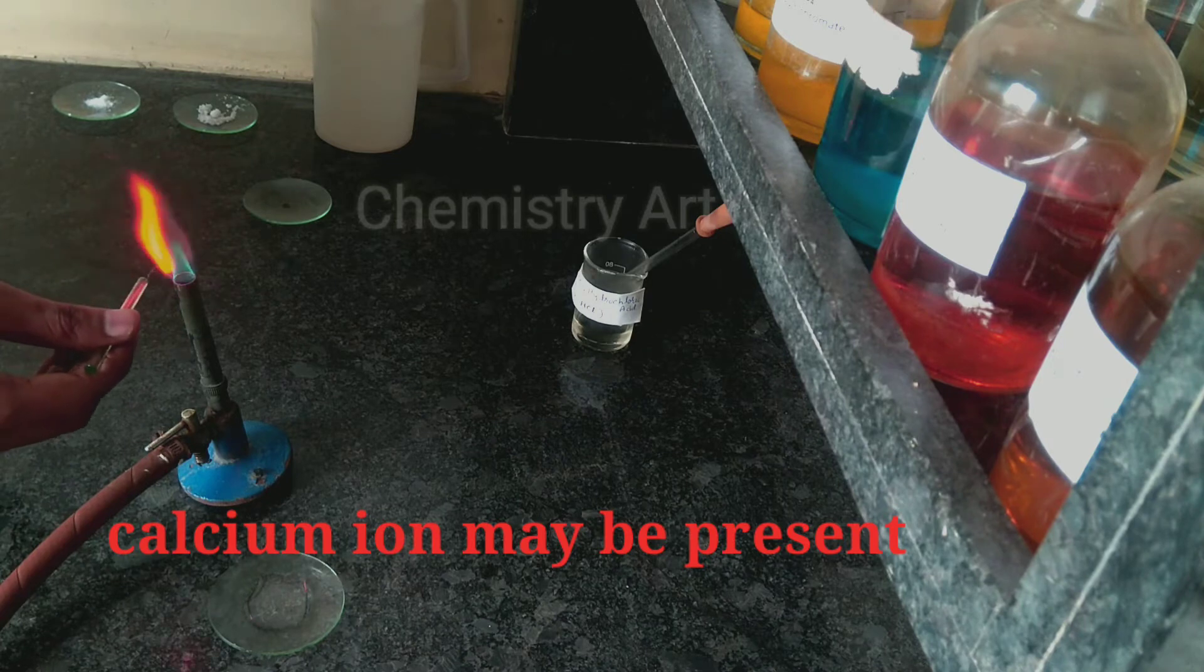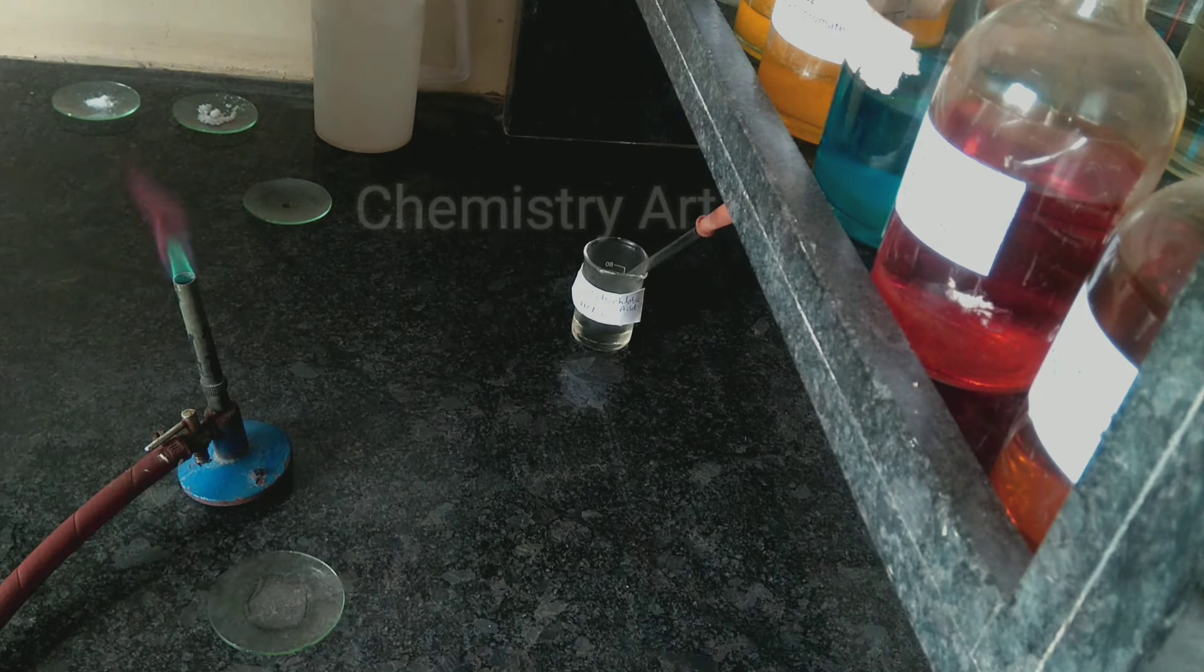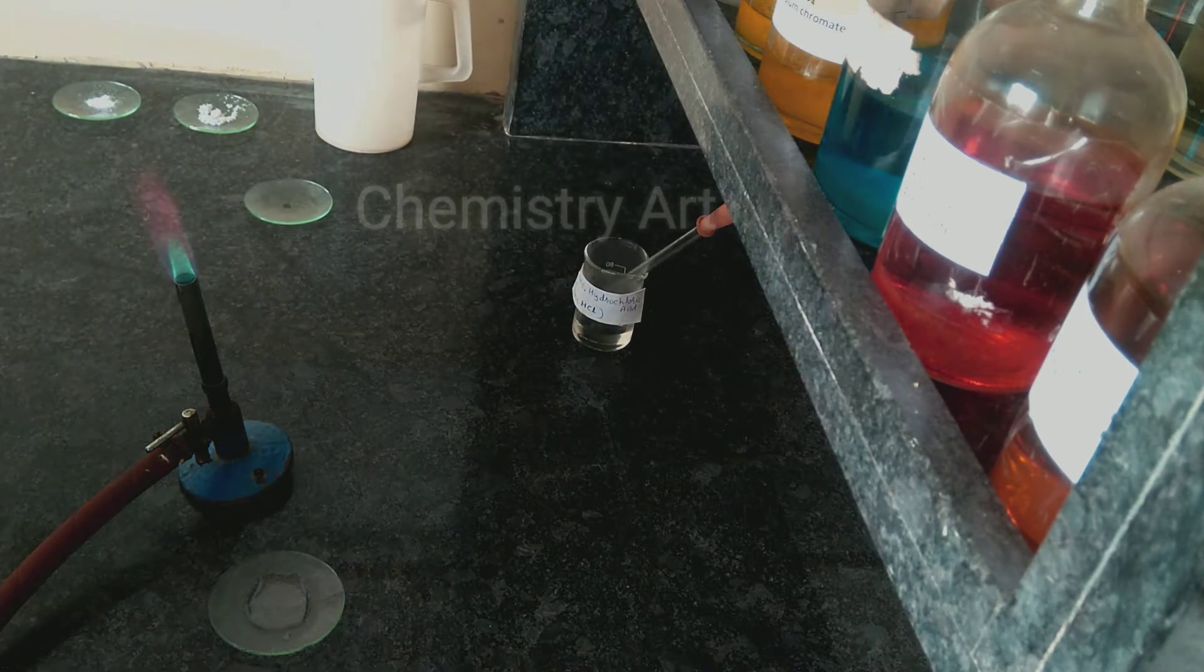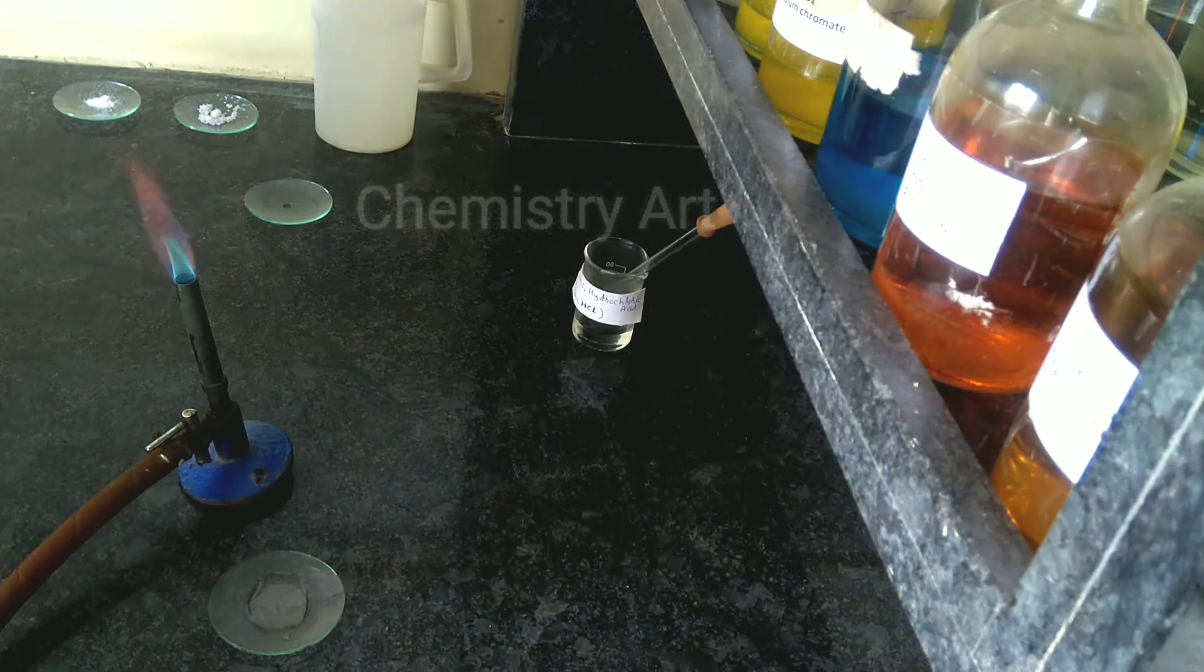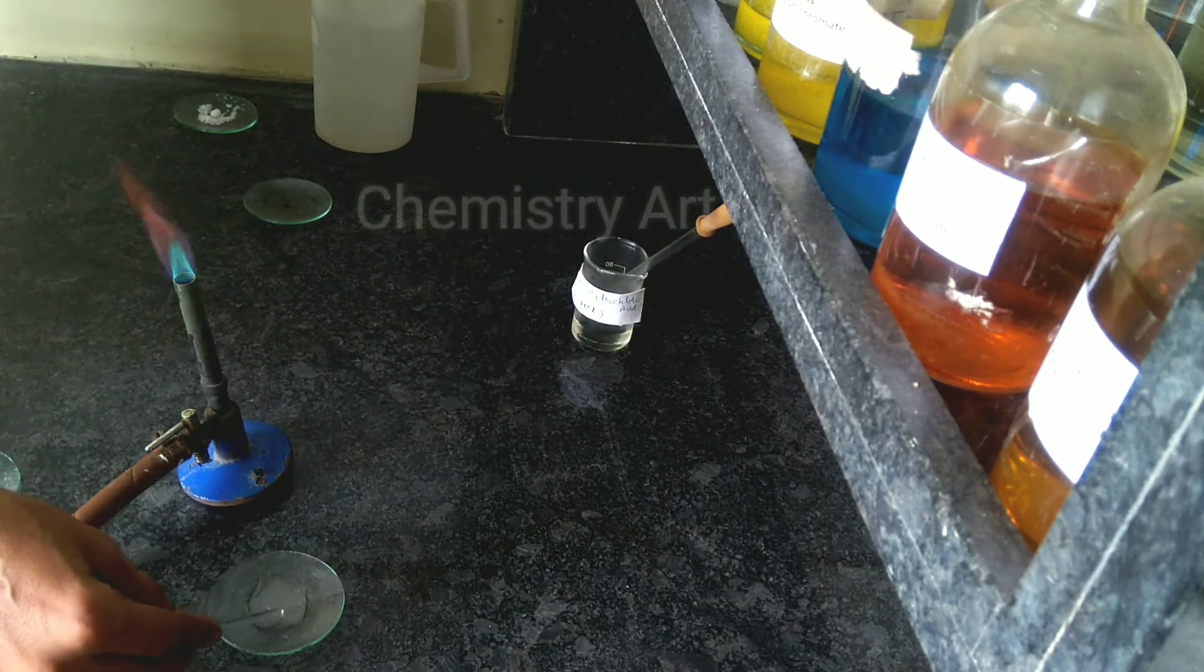Here you can see it is giving the crimson red color, showing the presence of calcium ion. You have to remember the color. The red color is showing that salt contains calcium ion.